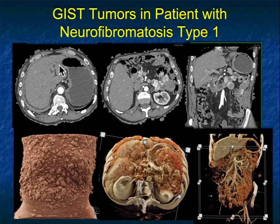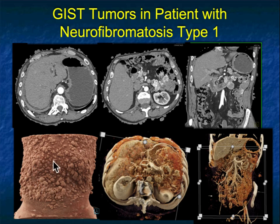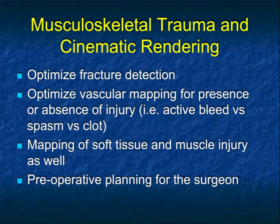Another GIST tumor. First, look at the patient's skin — you can see these nodules. This patient has neurofibromatosis, and the patient has multiple GIST tumors in the small bowel, which are not uncommon in patients with neurofibromatosis. One of the nice things with cinematic rendering is really nice visualization of the skin, and then of course the multiple neurofibromas seen in the patient's abdomen involving the small bowel.